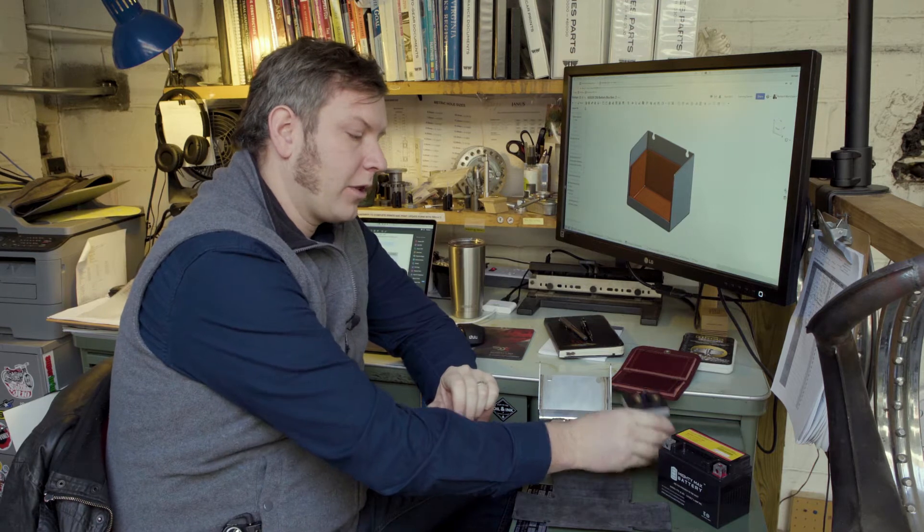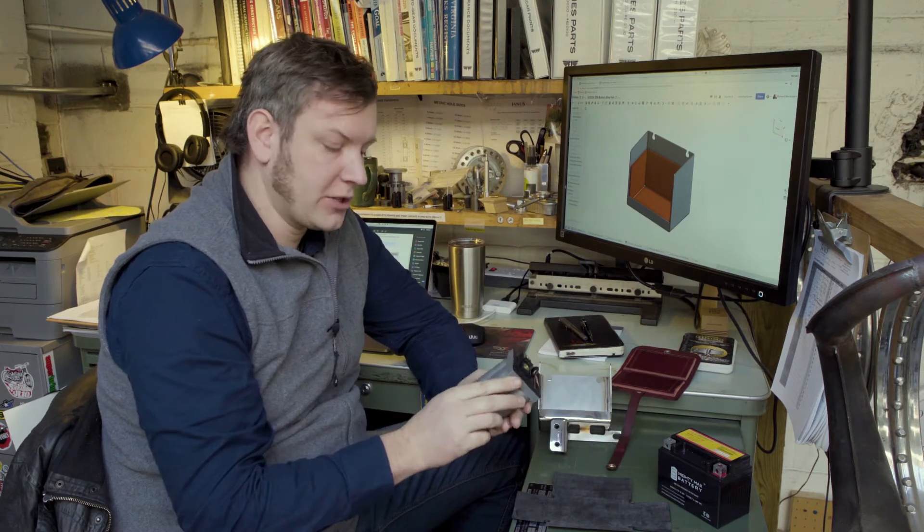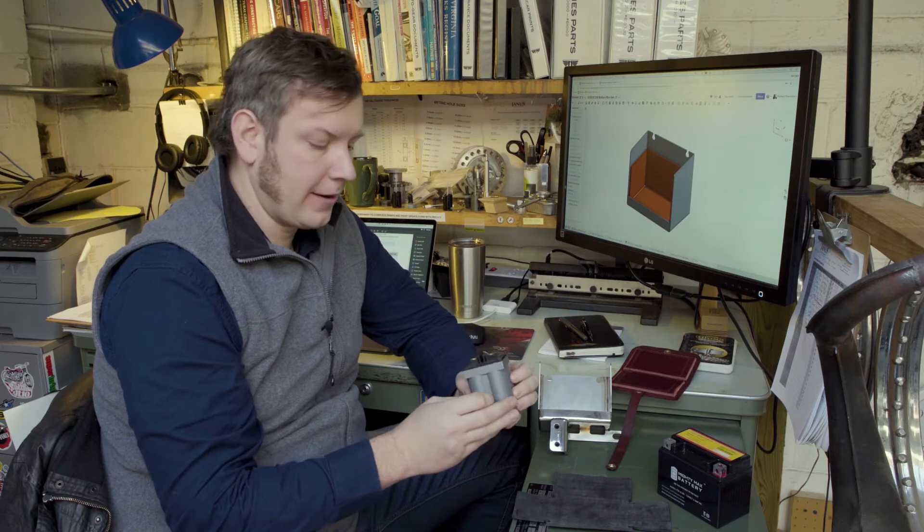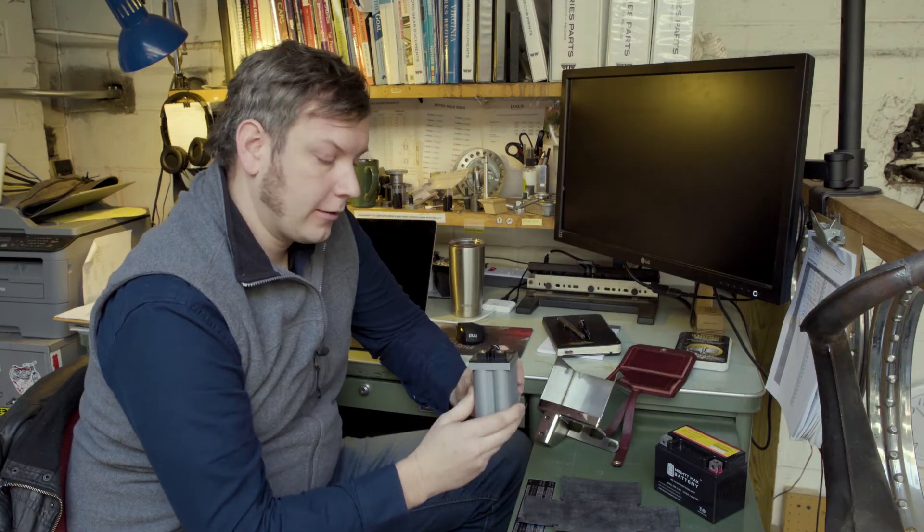We started off with our 250 model line, and actually with our 50cc models as well, with a lithium ferrous battery. These are very small, lightweight batteries that pack a lot of power for their size and weight.